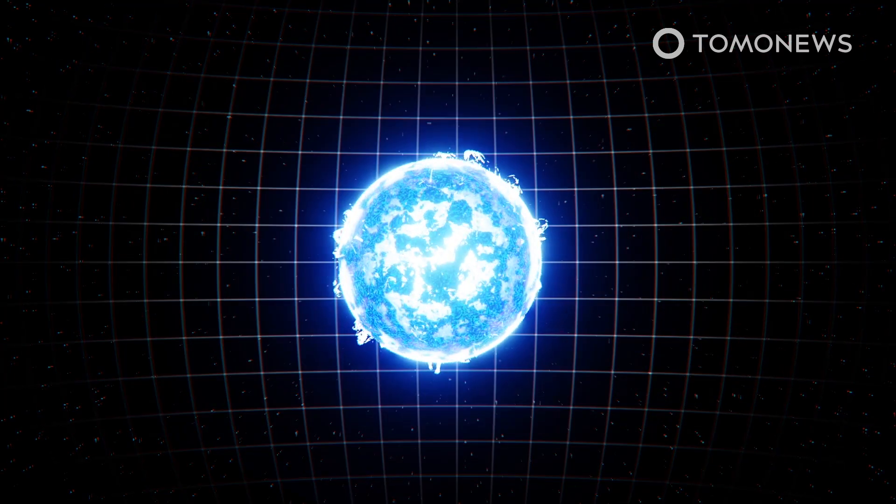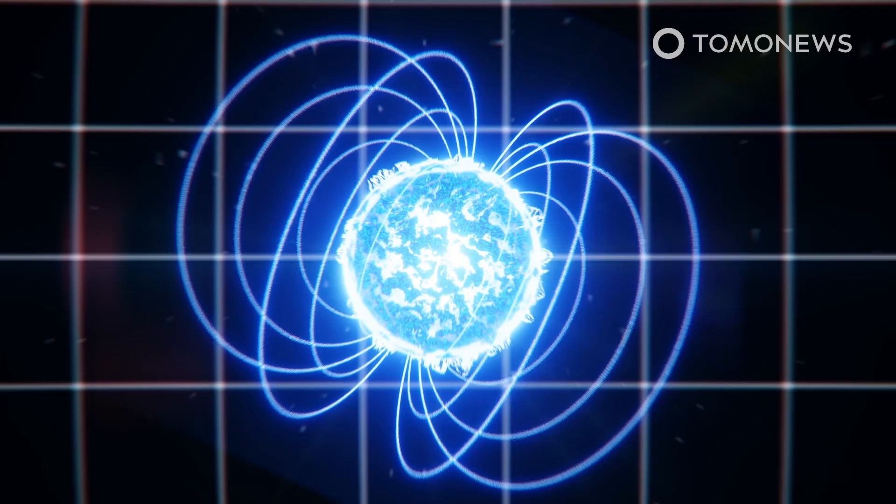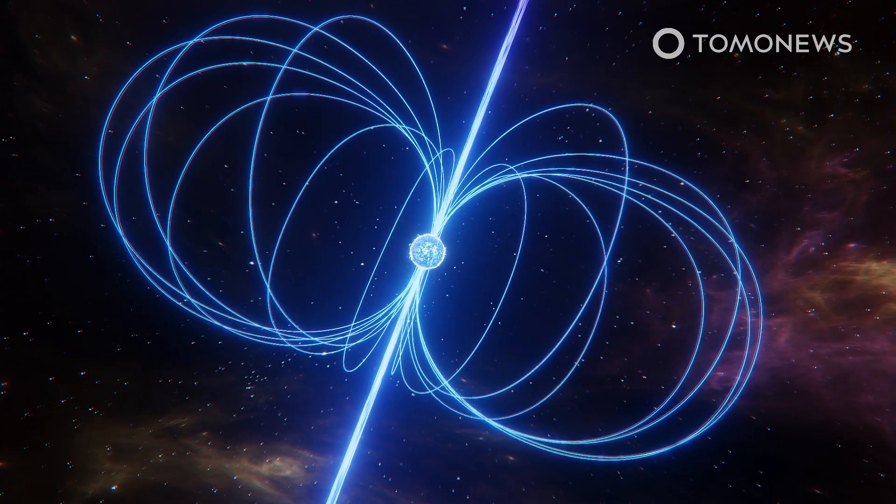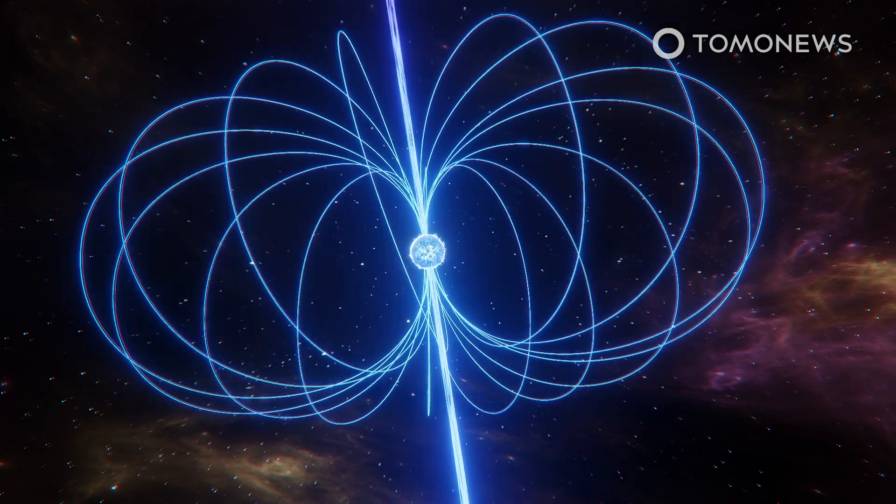As a neutron star, it packs twice the mass of the Sun into a body just 25 kilometers or 15 miles in diameter. A magnetar is a kind of spinning neutron star known as a pulsar.